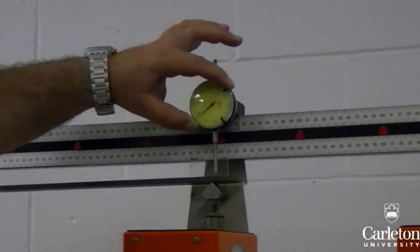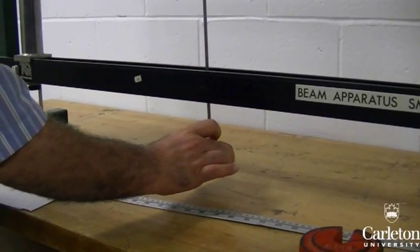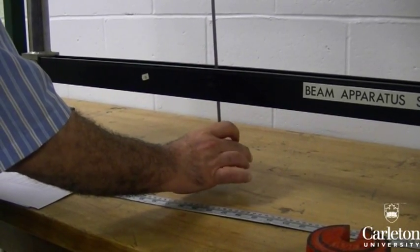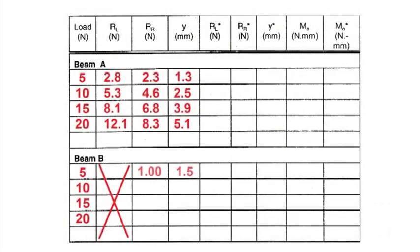Just as before, make sure to zero all gauges before starting. Add a load of 5 newtons, and as before, zero the displacement at the pinned support. Record the deflection from the hanger and reaction force at the pinned support. Repeat this for loads of 10, 15, and 20 newtons.